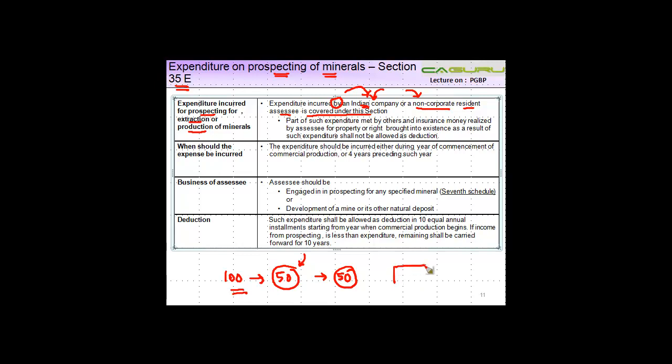This property by chance was destroyed and the insurance company paid you 20. So then out of 100, 50 is made by someone else, so 50 is allowable to you as a deduction.